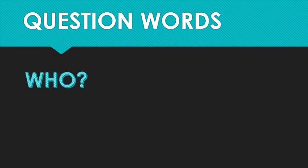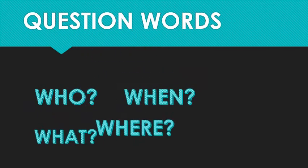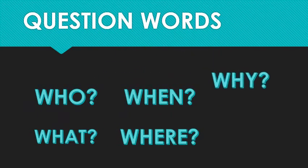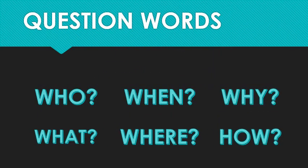They are who, what, when, where, why, and how. The fact that all of these start with the letters WH — except that weirdo 'how' — makes it easier to remember them. Just don't forget the H, otherwise you end up with 'were' instead of 'where', for example.